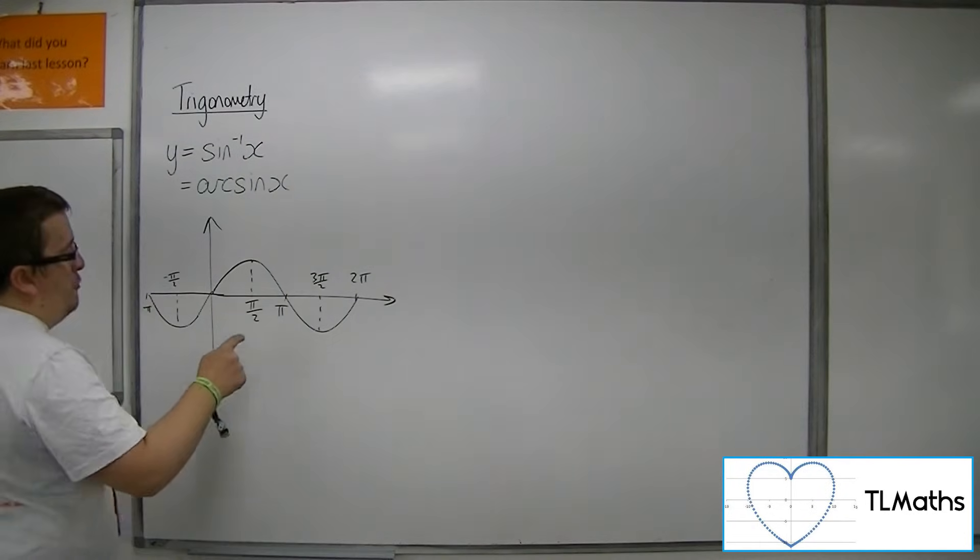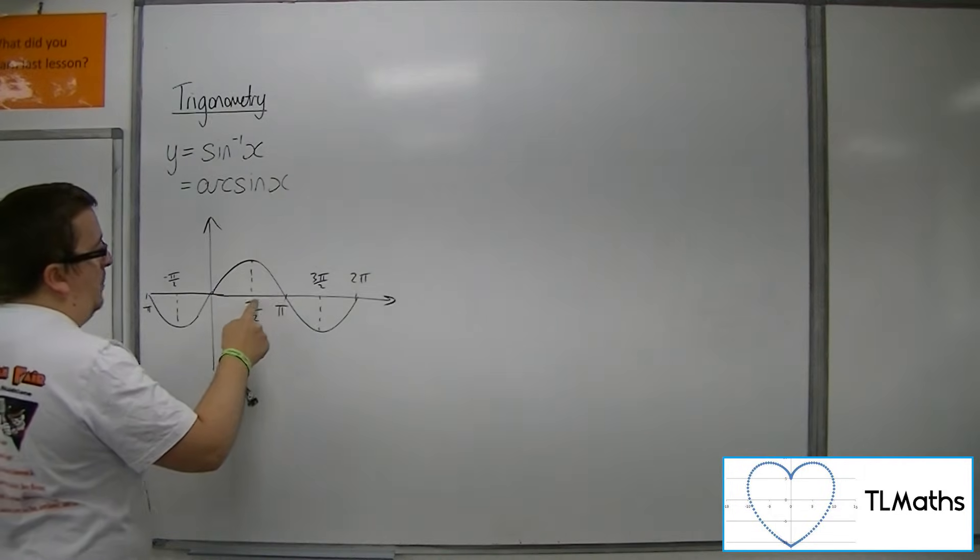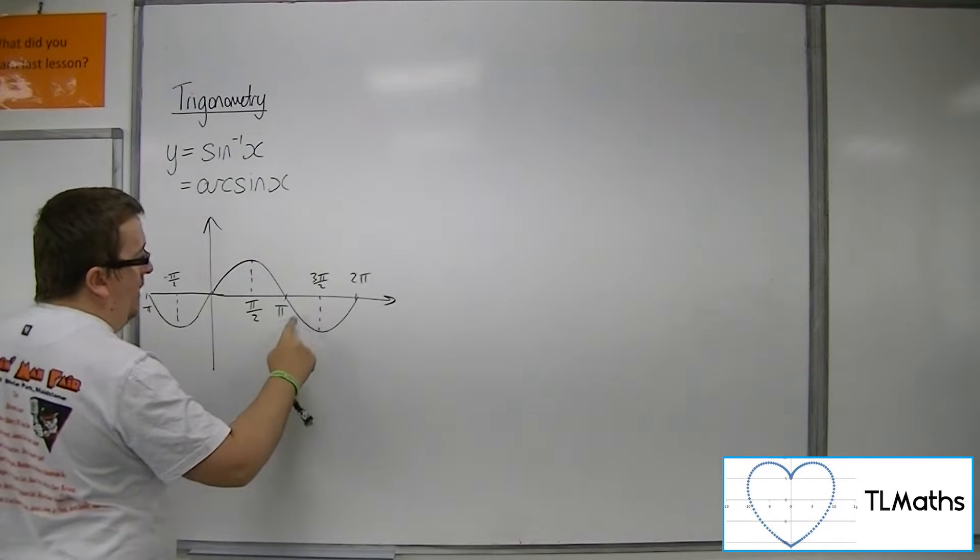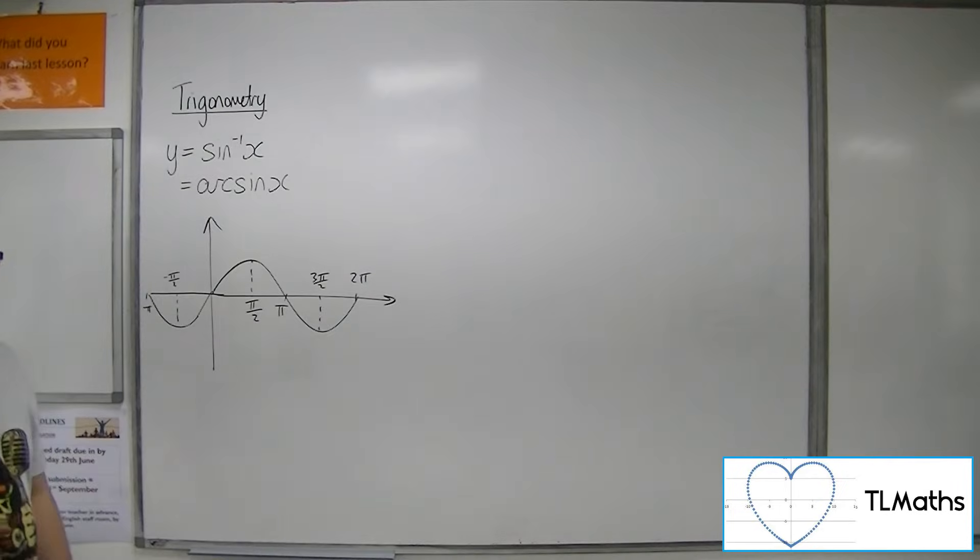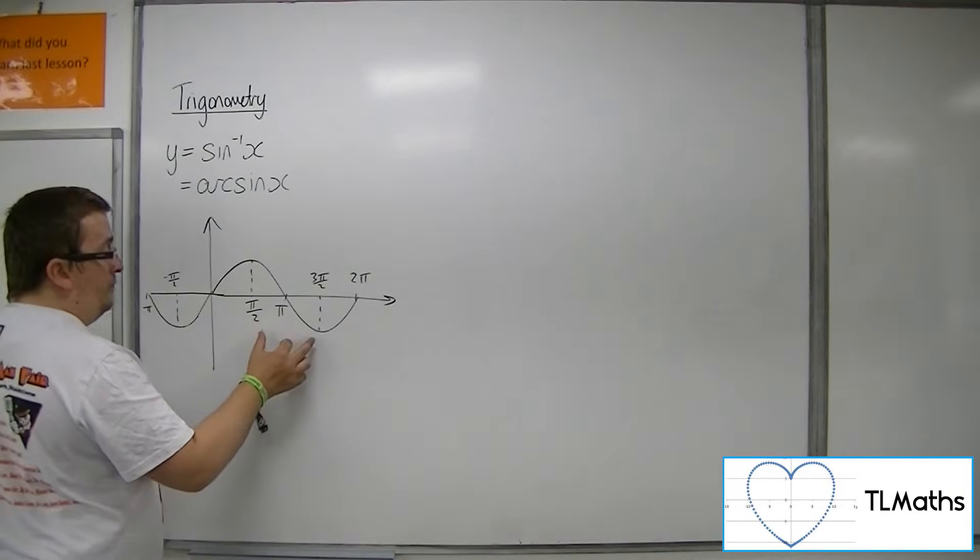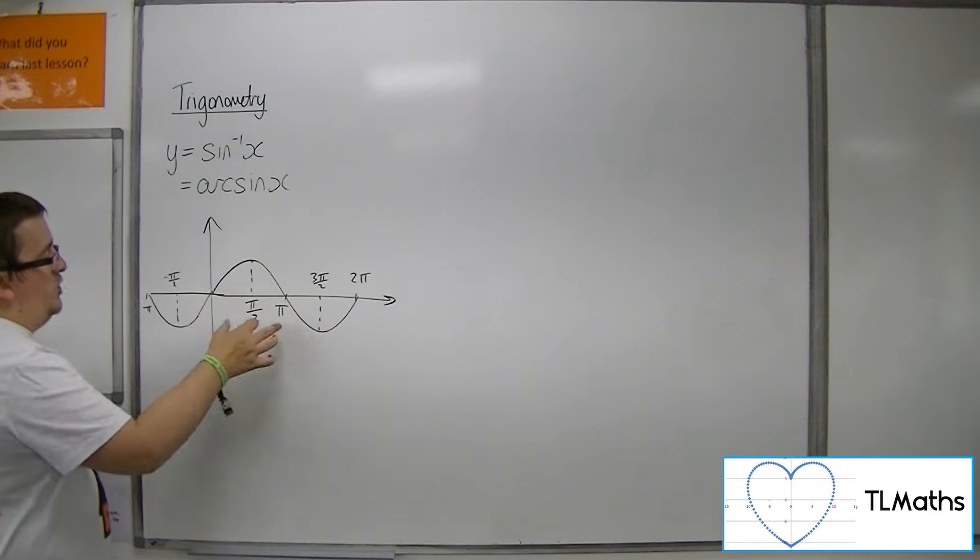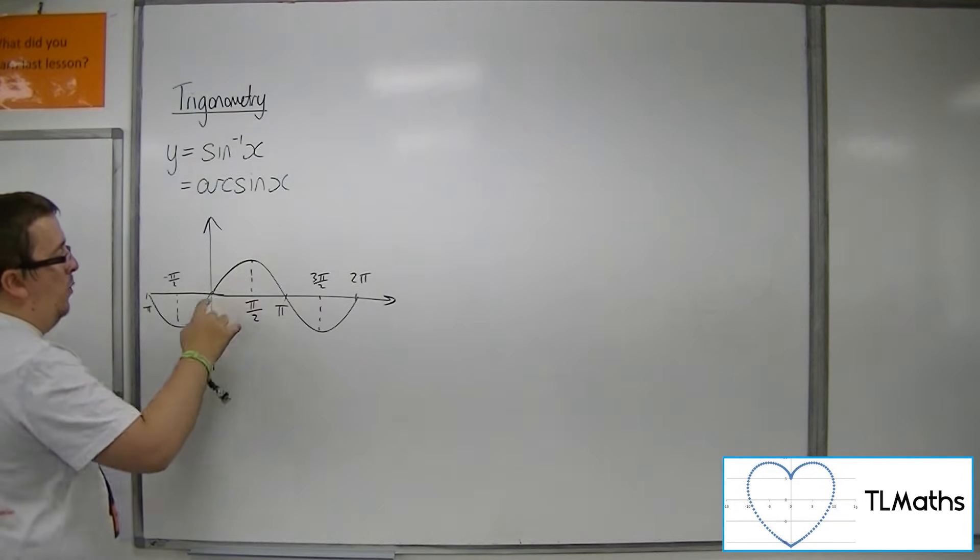So you could, for example, look at the function between pi over 2 and 3 pi over 2. This goes from 1 down to minus 1, and so covers all of the y values. But traditionally, we don't go for that. We actually go for minus pi over 2 to pi over 2, going from minus 1 up to 1.